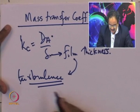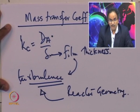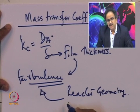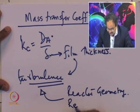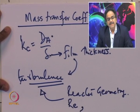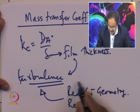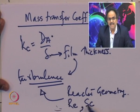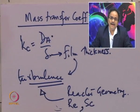In terms of dimensionless numbers, the Reynolds number (Re) is important for capturing flow effects, and there is another dimensionless number involving fluid properties — viscosity, density, diffusion coefficient — called the Schmidt number. So the mass transfer coefficient depends on the Schmidt number, Reynolds number, and reactor geometry. There are established correlations for mass transfer coefficients based on these parameters.